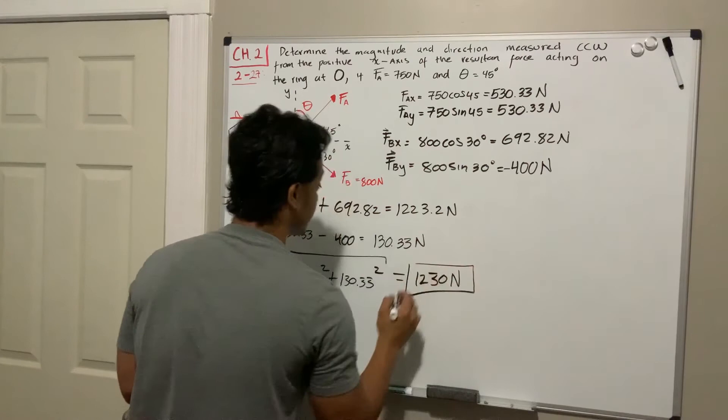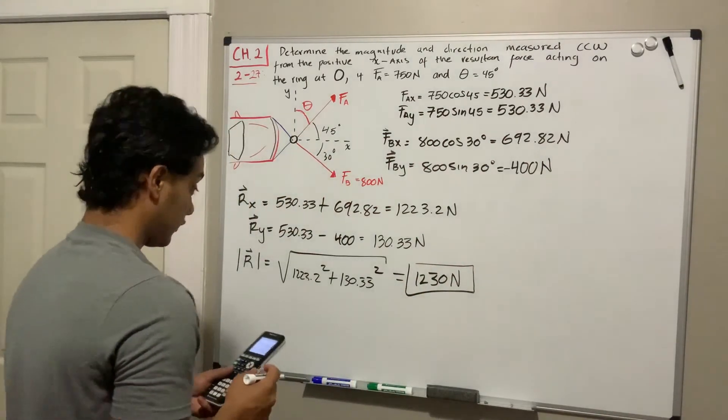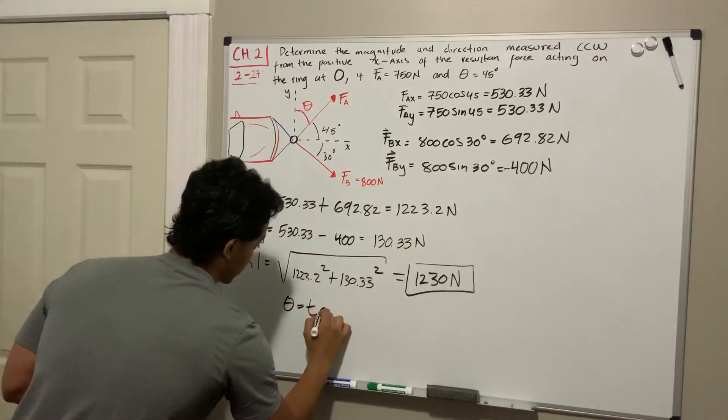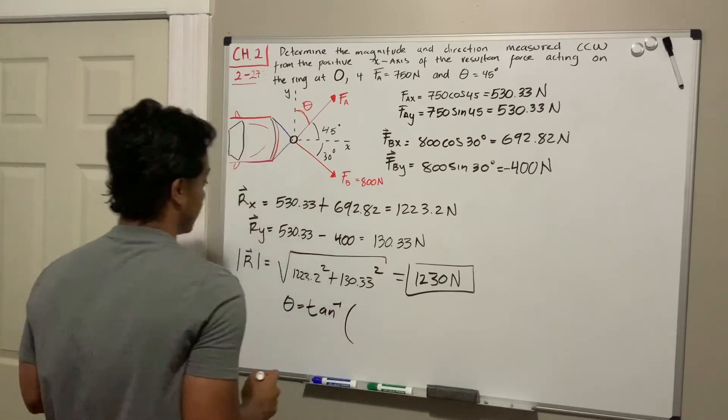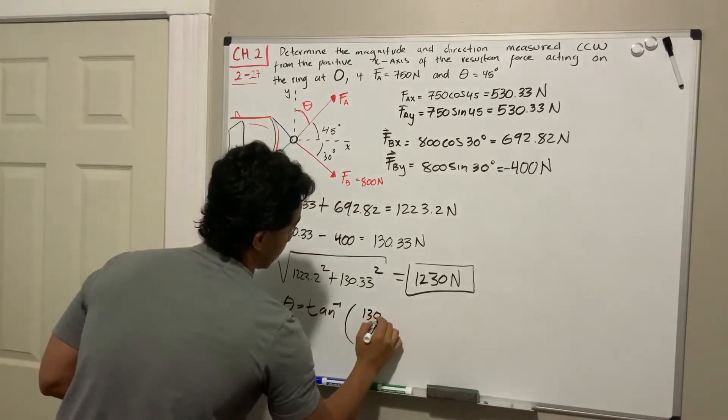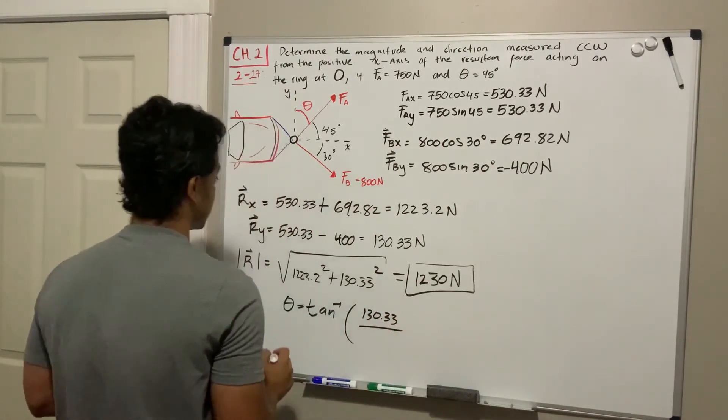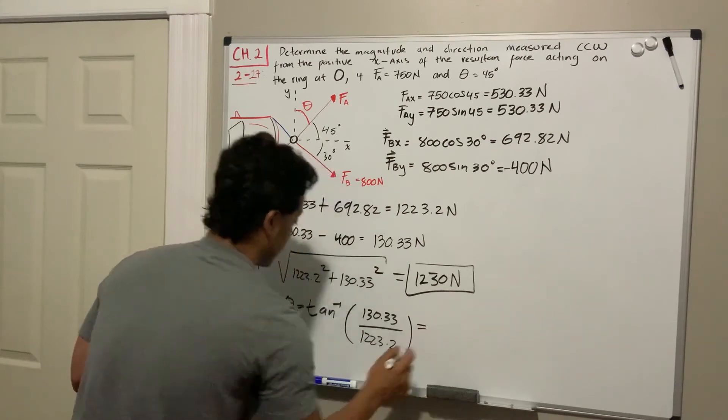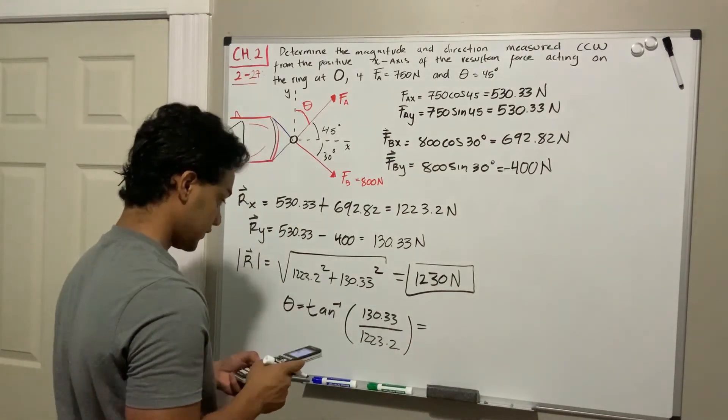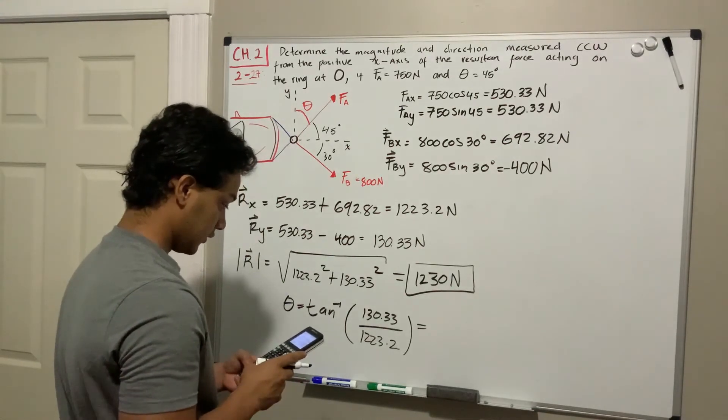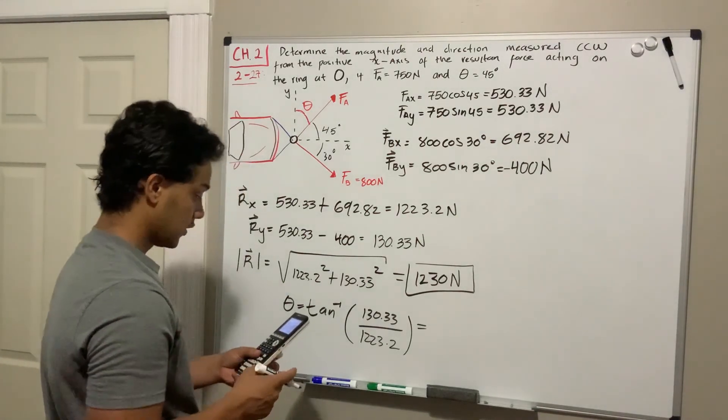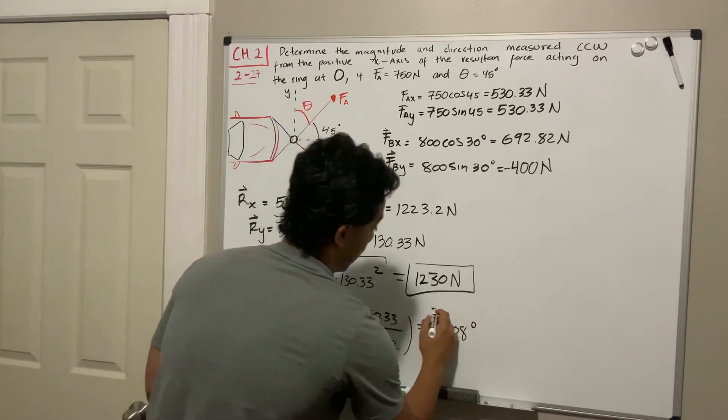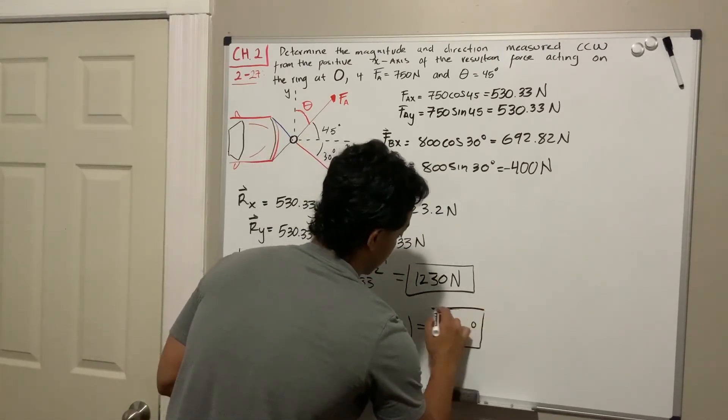All we're left with is to find the direction. In order to find the direction, we're going to find theta, which is by using the inverse tangent of its y-value, which is 130.33, divided by its x-value, which is 1223.2. Let's see how much that is. This is equal to 6.08 degrees, and this is our second answer.